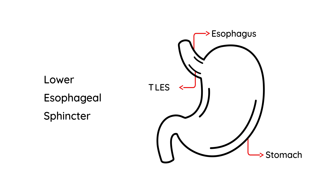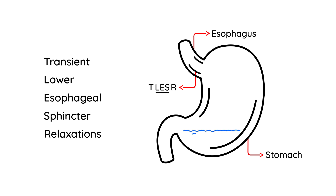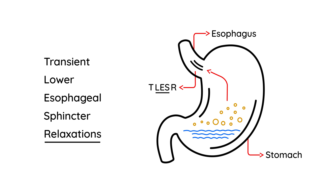Periodically you have something called TLESR — transient lower esophageal sphincter relaxations. The lower esophageal sphincter muscles, when closed, prevent stomach contents from going back up. We're really talking about acid: when the LES is closed, acid doesn't reflux back. But in GERD, these relaxations occur and the acid goes back into the esophagus — that's really the heart of GERD.